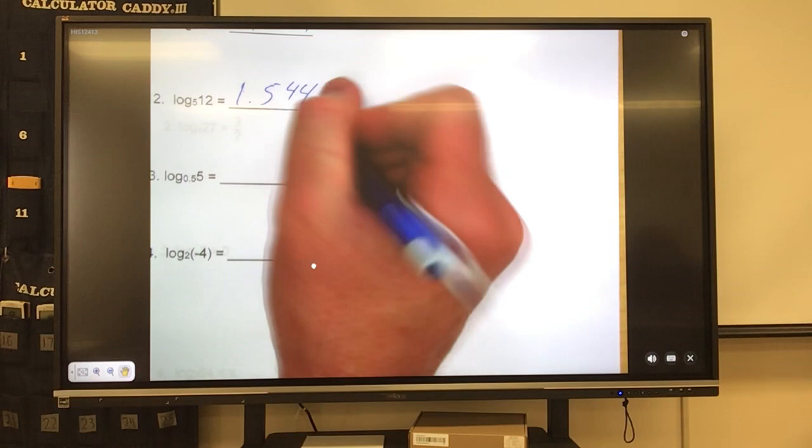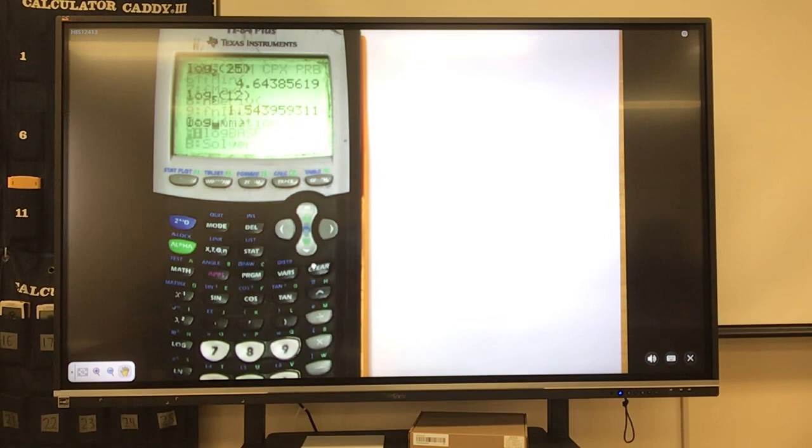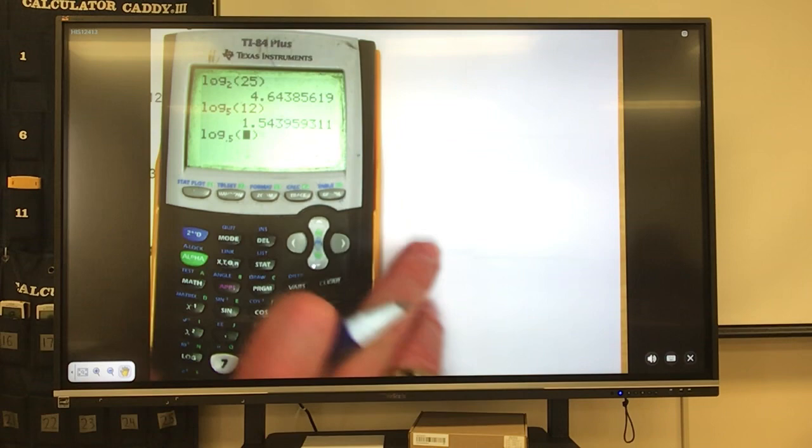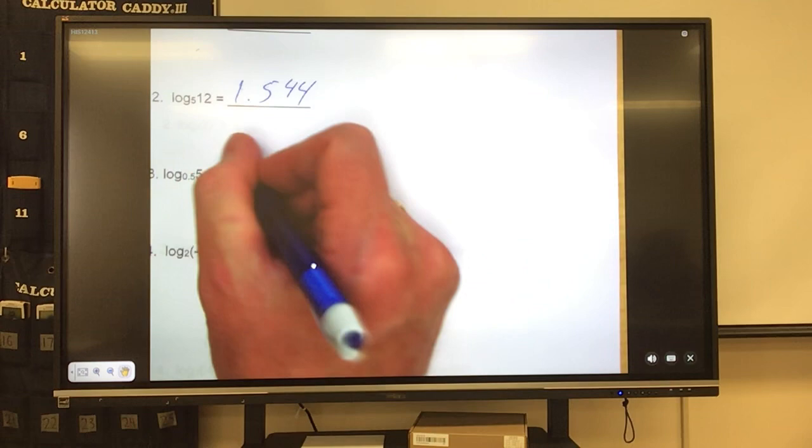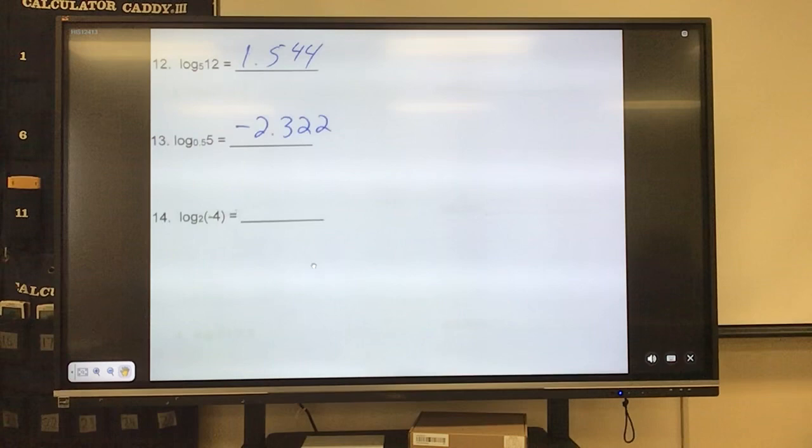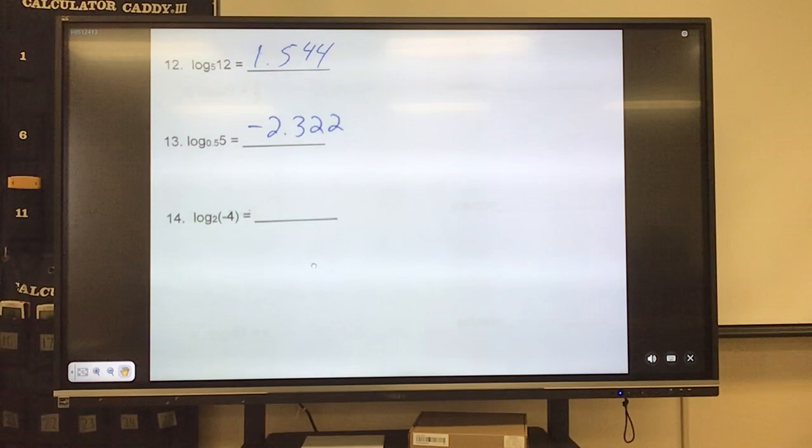Next one, let's fly through them here. Log base 0.5 and 5, and we're looking at this guy here, that's a 9, so it raises that to a 2, so it'll be negative 2.322. And our last one, what's our last one? Anybody got to guess what that one's going to be from last week? It's going to be no solution or undefined.